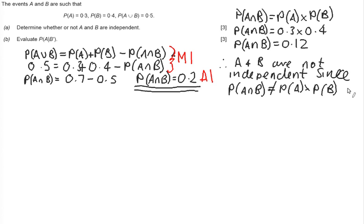And then finally, you get your third mark for making sure that you state that A and B are not independent since the probability of A intersect B is not equal to probability of A times the probability of B. So let's have a look at part B now. You can use the formula. Personally, I'm in the habit of just drawing a Venn diagram. It helps to understand the Venn diagram and you can see how the formula works.